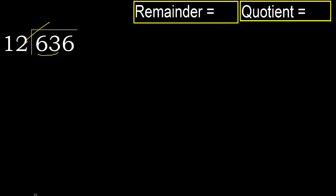12 multiply by 6 is 72 — it's greater. Multiply by 5 is 60 — it's not greater, okay. So 5. Subtract. Next.